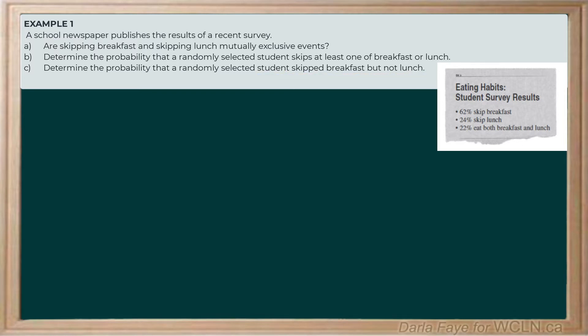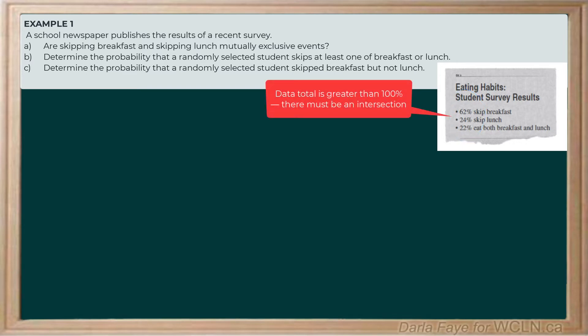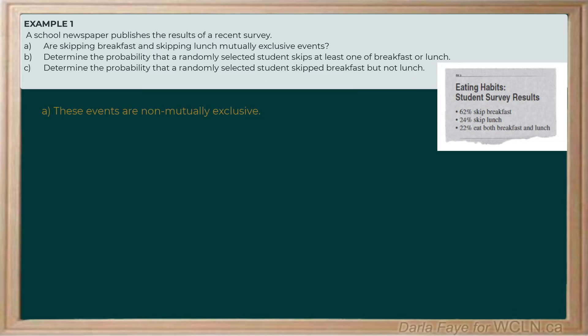Let's start by determining whether or not these events are mutually exclusive. If I add up each of these percentages — 62% plus 24% plus 22% — that adds up to more than 100%, a total of 110%. That means there must be students who are skipping both breakfast and lunch, so there is an intersection. That tells us these events are non-mutually exclusive.